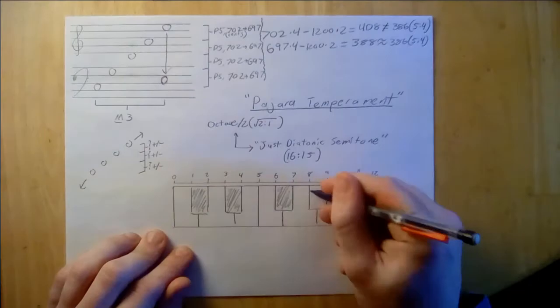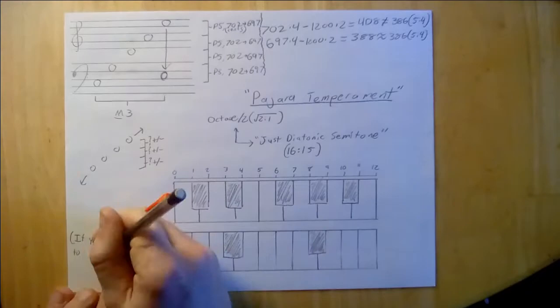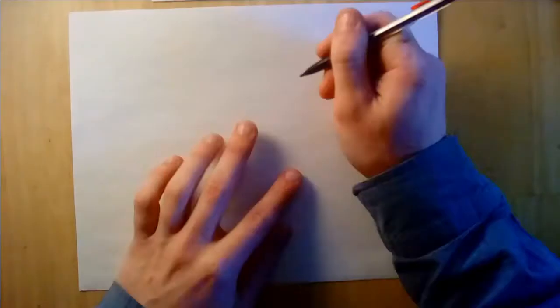The MOS scales that Pajara generates are very different from our familiar western scales, however. One such scale is the Symmetrical Dicatonic Scale, which is really just a 5-note MOS scale that repeats at the half octave.